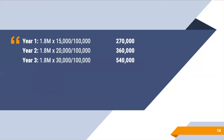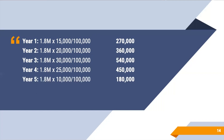For year three: 1,800,000 times 30,000 divided by 100,000 equals 540,000 pesos. For year four: 1,800,000 times 25,000 divided by 100,000 equals 450,000 pesos. And in year five: 1,800,000 times 10,000 divided by 100,000 equals 180,000 pesos depreciation. That's the depreciation for the output method.